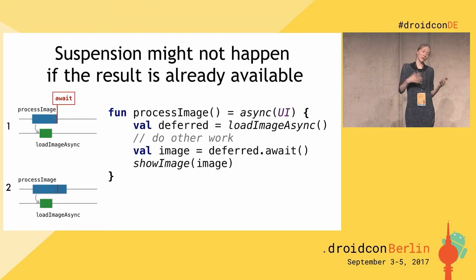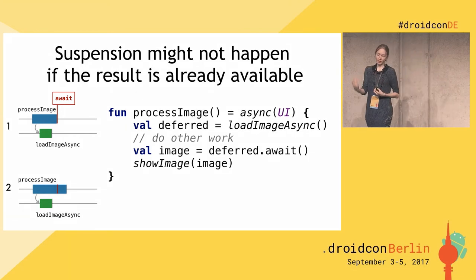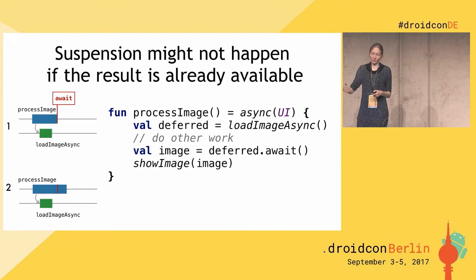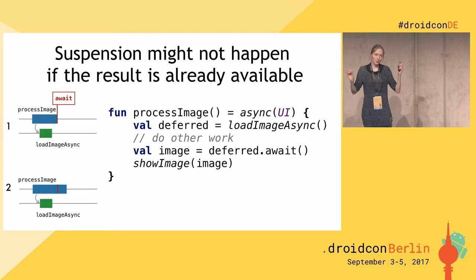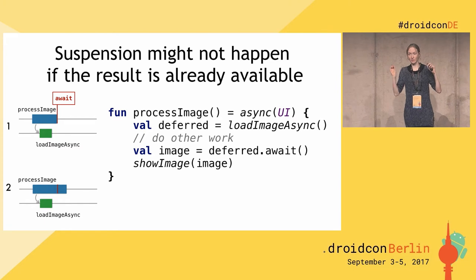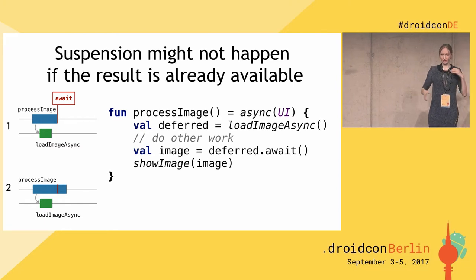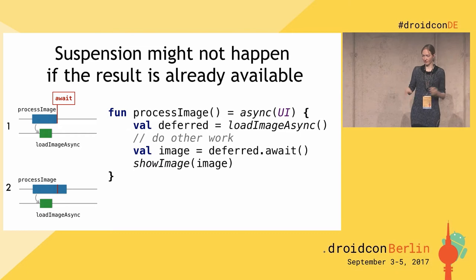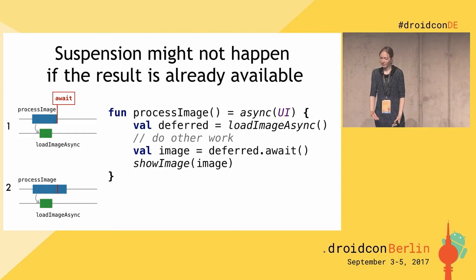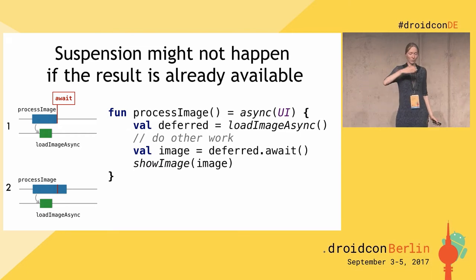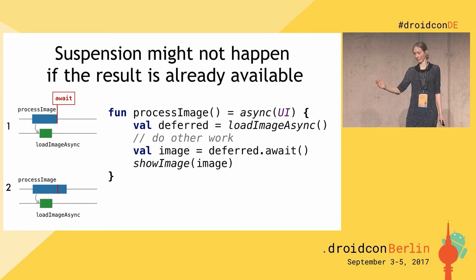Suspension might not actually happen if the result is already available. For example, we start `loadImageAsync` and do some other work while it loads. If our image is cached or very small, the result is available immediately. In this case, when we call `await`, if the result is ready, we can just continue — no overhead is created.